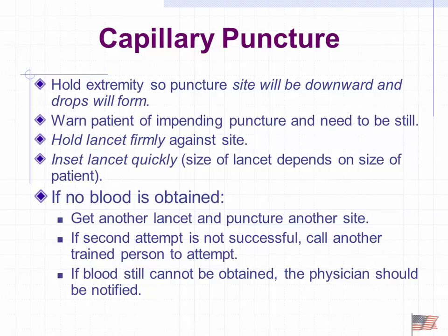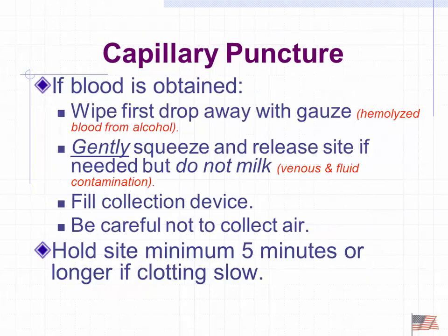Warn the patient of the puncture. The lancet is spring-loaded — just hold it firmly against the skin and push the button; it does the puncture on its own. If you don't get blood, try another lancet or another site. As with arterial puncture, if you can't get it after two attempts, get someone else. When blood is obtained, wipe the first drop away since it may have alcohol mixed in. Then gently squeeze — but do not milk — as being forceful draws venous blood into the sample.